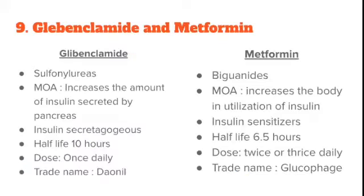When you differentiate two things, always remember to divide your answer into two columns and explain the differences. For question 9, glibenclamide and metformin — both are oral hypoglycemics, so don't write that as a differentiation point; that is a similarity. Whenever you differentiate two drugs, don't write the similarities.